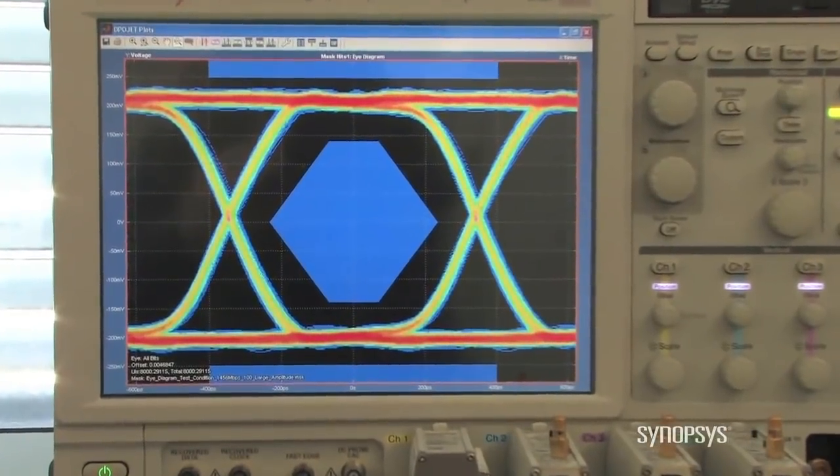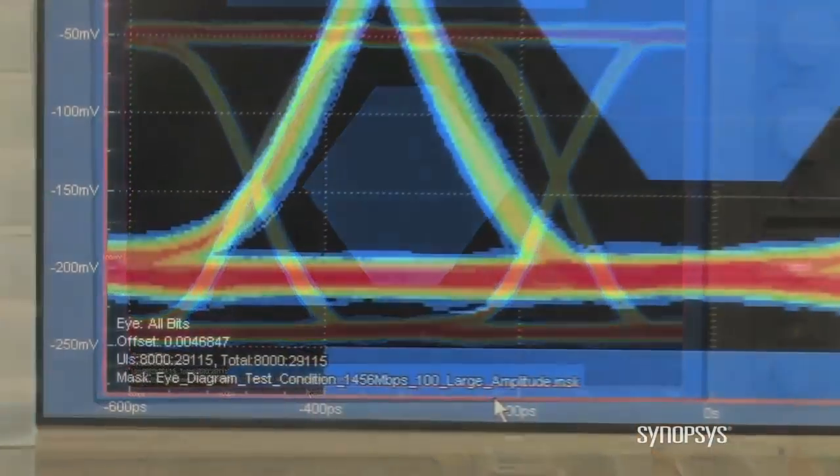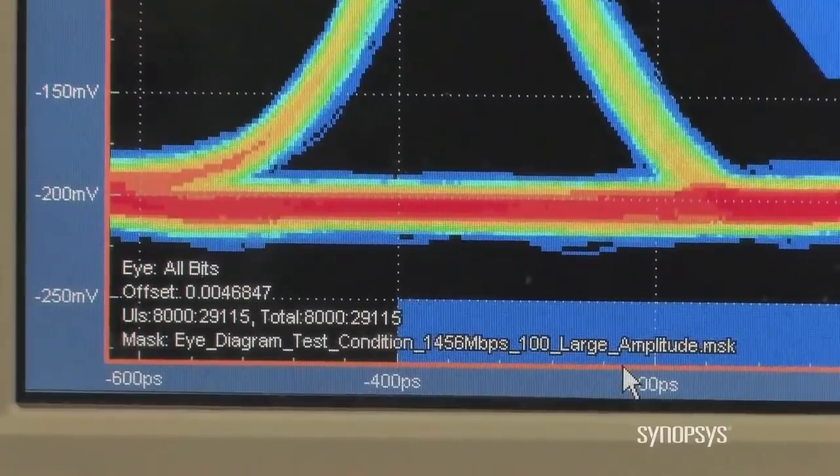These measurements allow us to visually understand the signal quality of the DesignWare MIPI M-PHY IP when transmitting data patterns at 1.456 Gbps and also show the interface under normal user scenarios as well as more aggressive user scenarios.